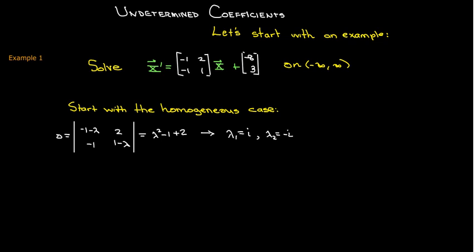As usual we will start with the homogeneous equation and solve it. So we get our characteristic equation and find that we have two complex roots which are conjugates of each other: lambda 1 equals i and lambda 2 equals negative i.